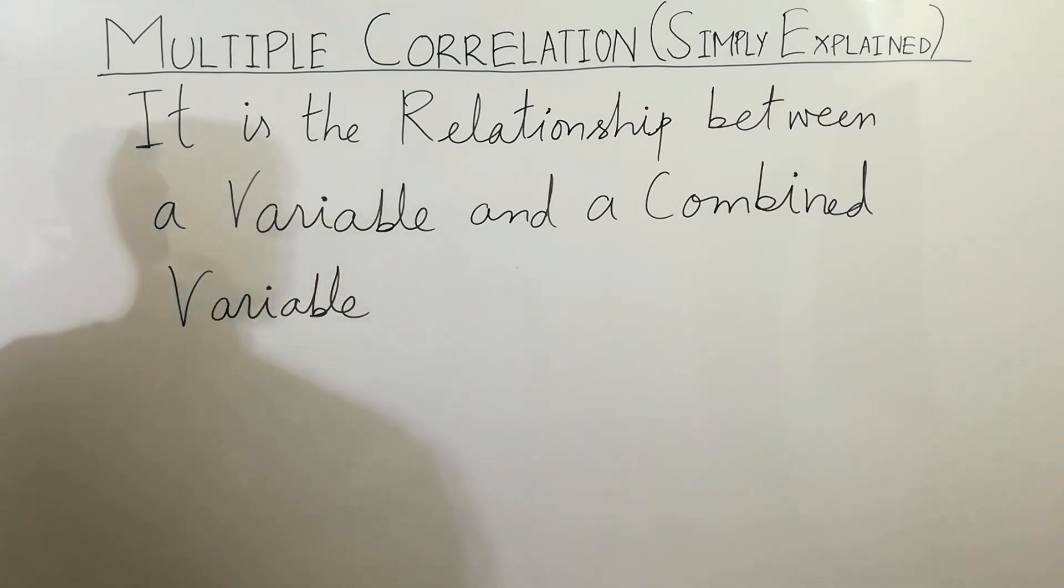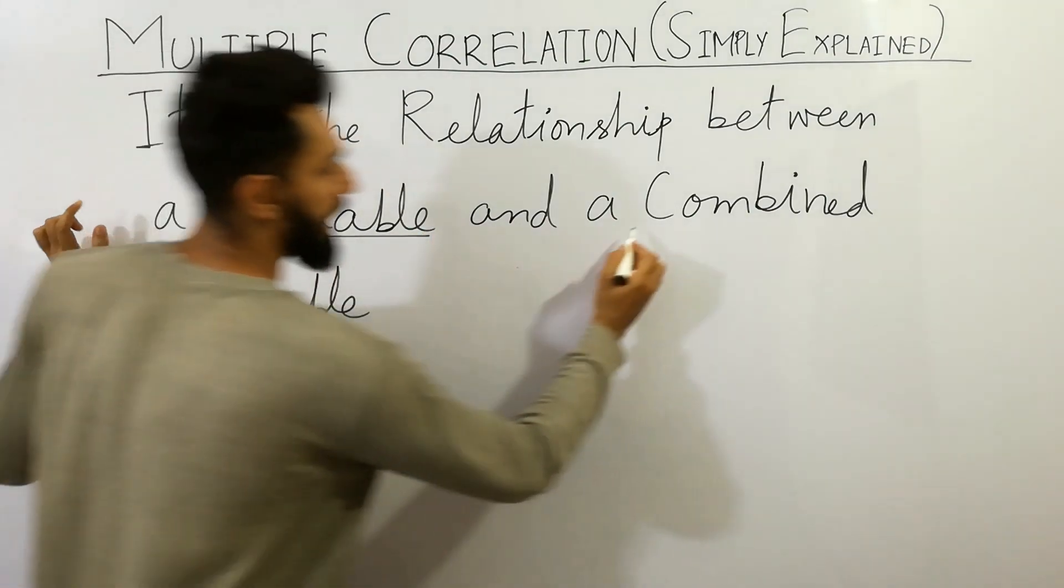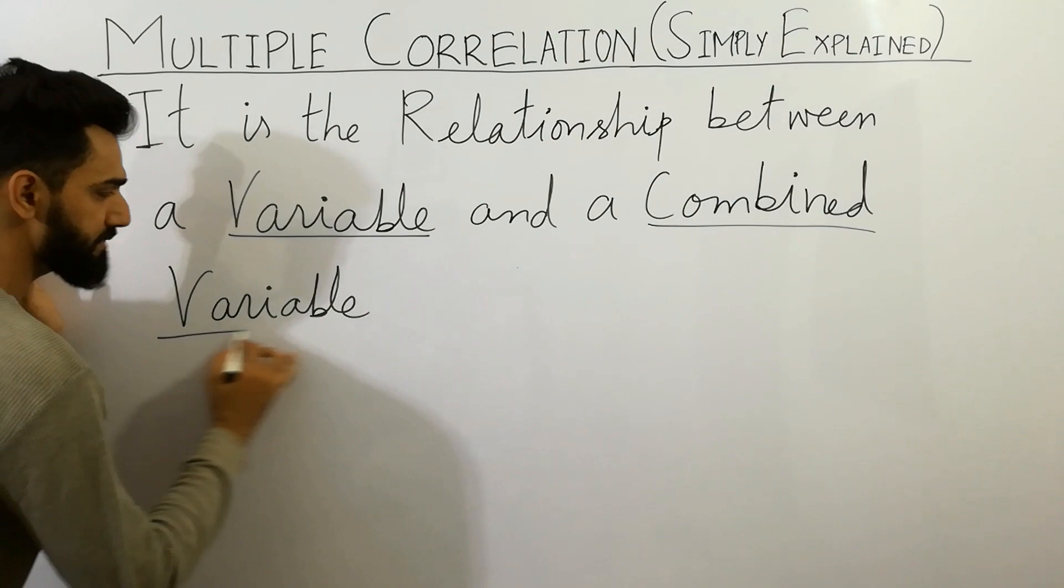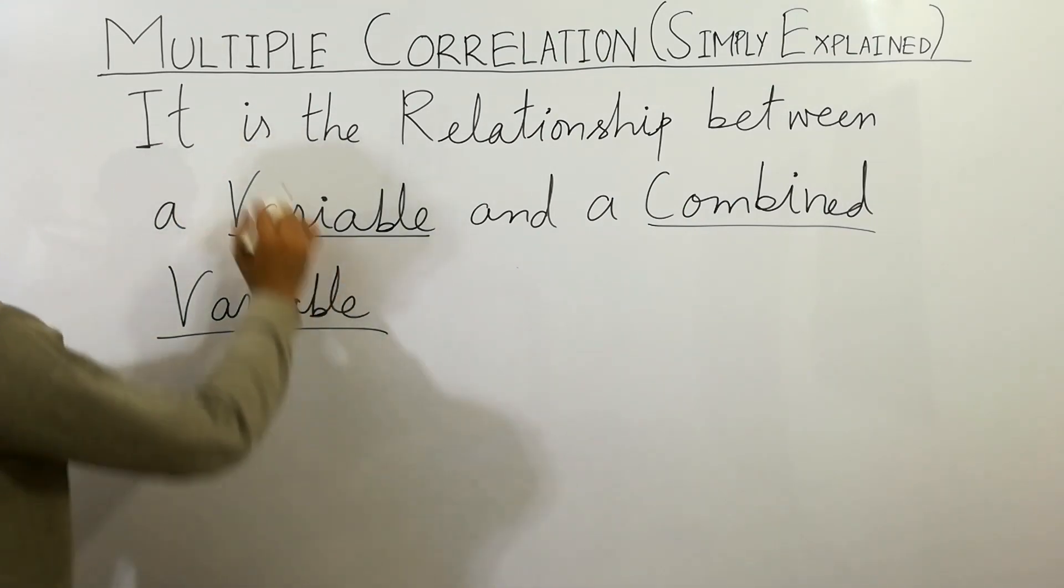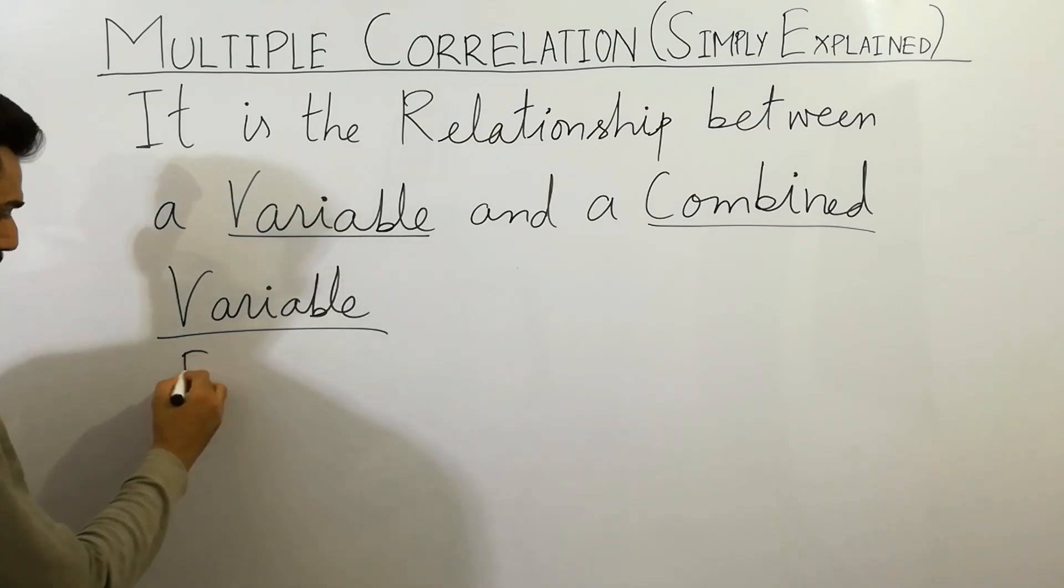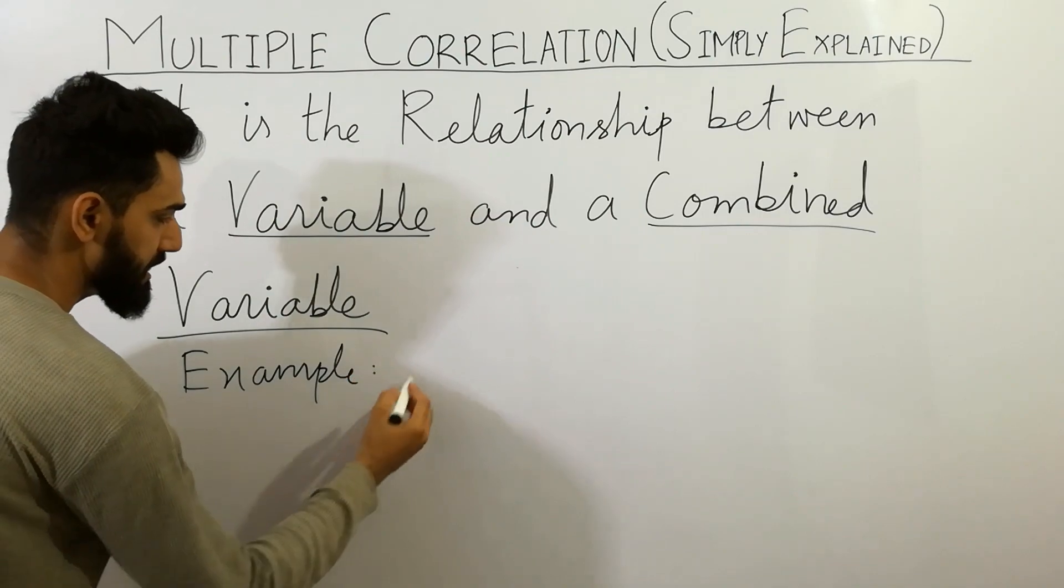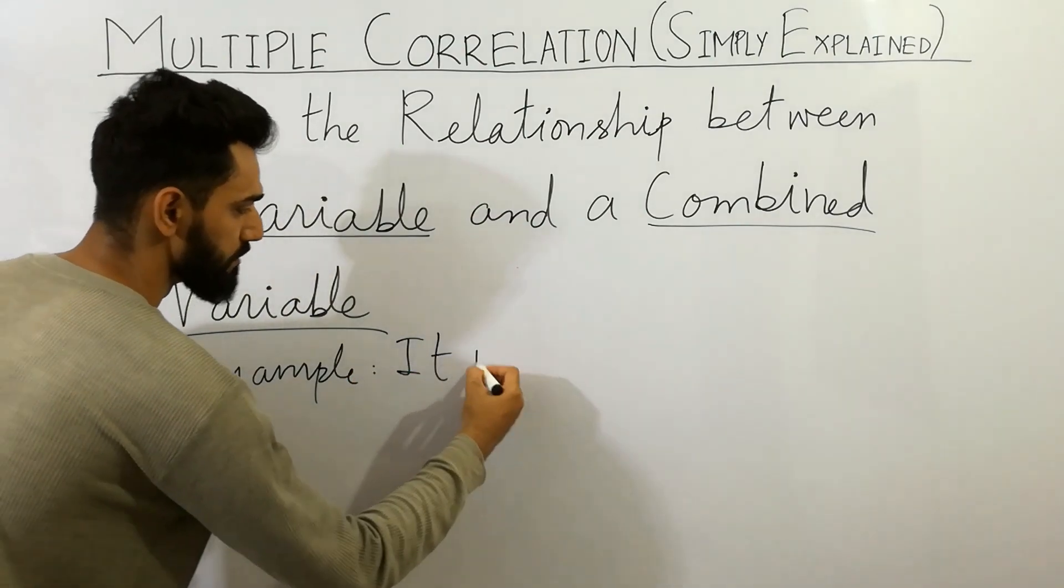So must remember that the relationship between a variable and a combined variable is called as multiple correlation. So let's discuss the example here, very very easiest example. Must remember that it is always